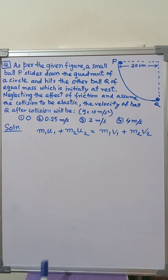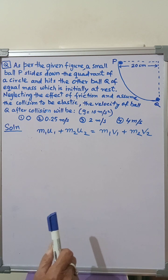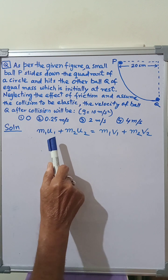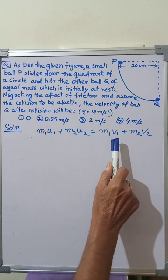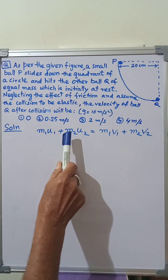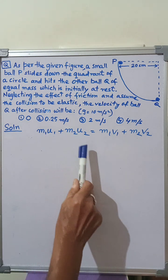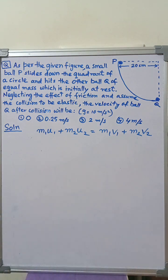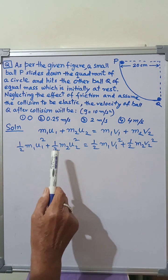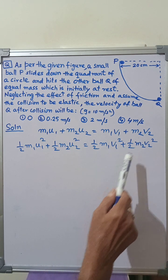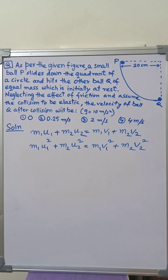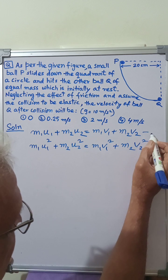In elastic collisions, both linear momentum and kinetic energy are conserved. The equation for conservation of linear momentum states that total momentum before collision equals total momentum after collision: M1·U1 + M2·U2 = M1·V1 + M2·V2, where M1 and M2 are the masses, U1 and U2 are initial velocities before collision, and V1 and V2 are velocities after collision. We mark this as equation 1.